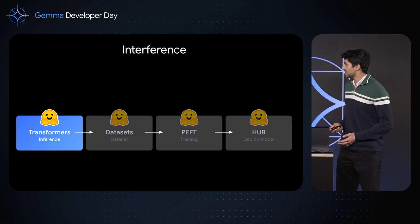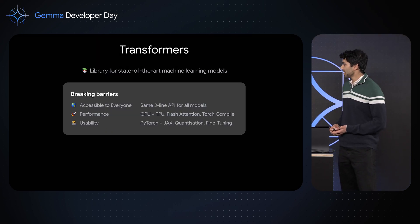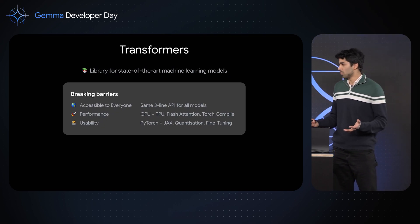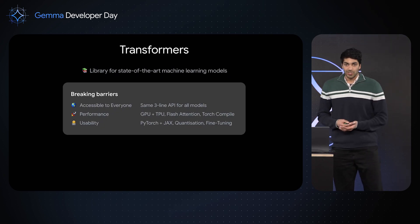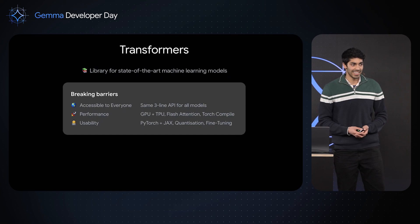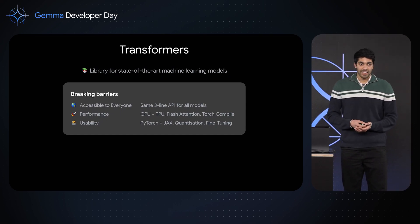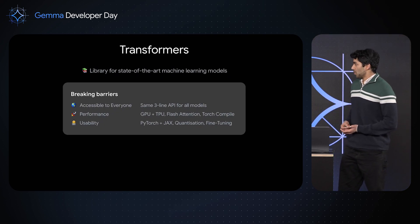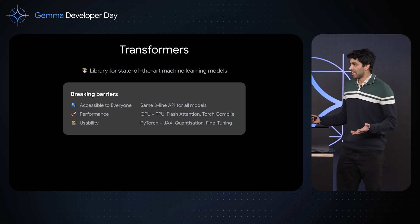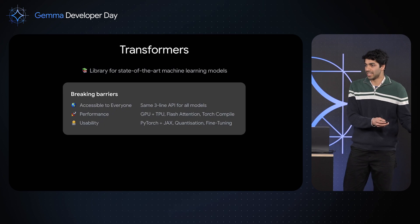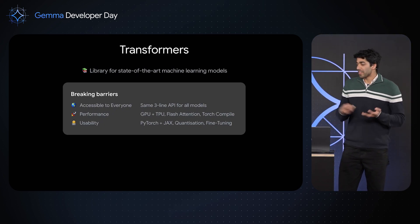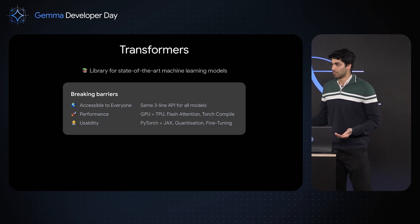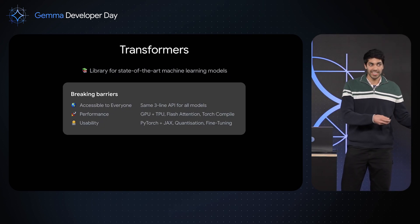Let's get started and look at inference in the Transformers library. Transformers is a state-of-the-art library for machine learning models — it encompasses natural language processing models like Gemma, but also computer vision and audio models. Transformers has maintained a consistent API right from its inception in 2019 with BERT and GPT. A tokenizer and model can be loaded from the Hugging Face Hub and inference can be run in just a few lines of code. What's amazing is that these same lines of code work not just for older models like BERT and GPT, but also for more recent ones like LLaMA and Gemma — meaning you can swap any existing models for the latest state-of-the-art ones with no code changes.